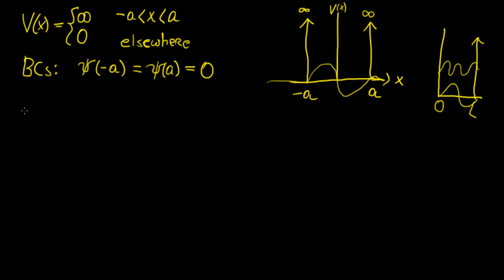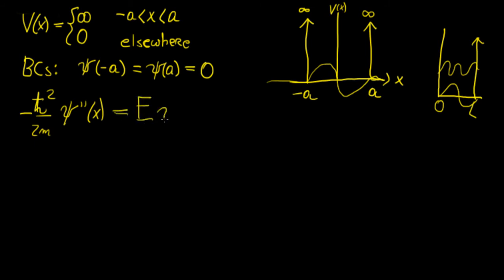The first thing we do is write the Schrödinger equation, starting with the term minus h-bar squared over 2m times the second derivative of the wave function. The potential is zero within the region, so that term vanishes, and we write energy times the wave function. This is the same equation as the regular infinite square well, but the boundary conditions have changed, which has a very interesting effect on how the system behaves.